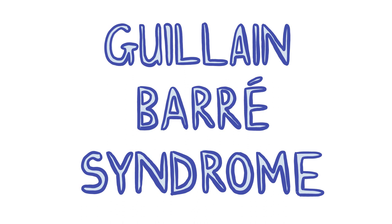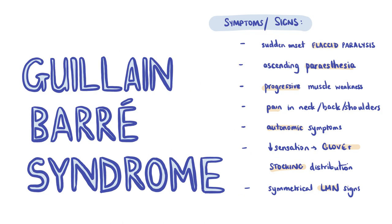The last topic we will cover today is Guillain-Barré syndrome. Guillain-Barré syndrome is an acute polyneuropathy caused by immune-mediated demyelination of nerves of the peripheral nervous system following an infection, usually with Campylobacter jejuni. Patients present with a sudden onset of flaccid ascending paralysis and ascending paraesthesia starting in the hands or feet. The muscle weakness is progressive and starts with both legs, ascending to affect the arms as well. Patients may complain of pain which tends to occur centrally in the back, thighs, or shoulders.